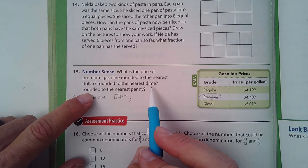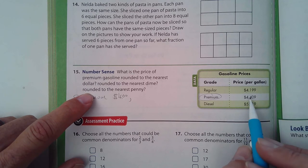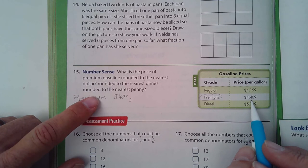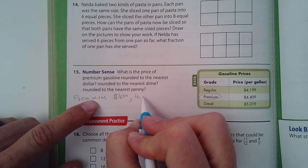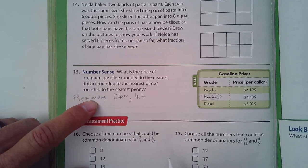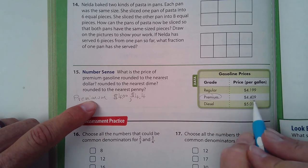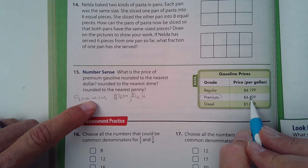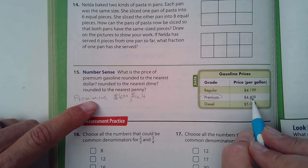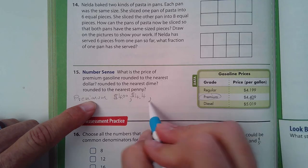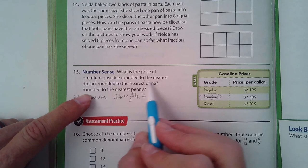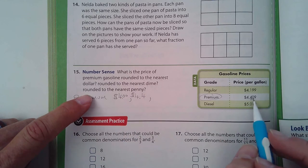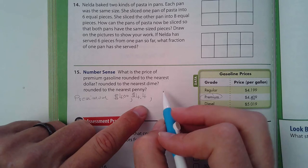And then it says, then it says rounded to the nearest dime. So that would be four dollars and—what? Four point four, four dollars and forty cents, because look, this four here we're rounding, that one—is this a five or larger, the zero? No, so it stays the same. And then rounded to the nearest penny. Oh, I did that backwards. Rounded to the nearest dollar, rounded to the nearest dime, that threw me. So the nearest penny would be—this would be—this would be the penny.